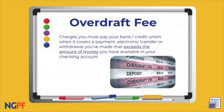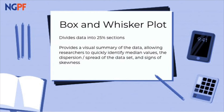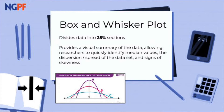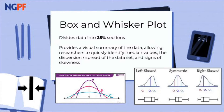We will be analyzing these fees by making a box and whisker plot. It's useful to create and analyze box and whisker plots because it divides the data into quartered sections, offering a visual summary of the data, allowing researchers to quickly identify the median values, the dispersion — or in other words, spread of the data — and any signs of skewness.